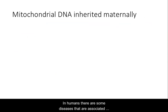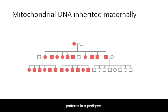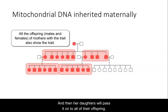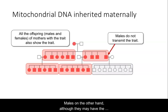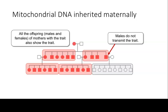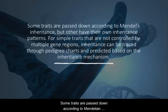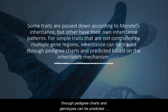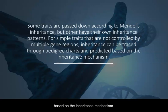In humans, there are some diseases associated with mitochondrial DNA that can be traced through maternal inheritance patterns in a pedigree. Mothers with the trait pass it on to all of their offspring, and their daughters will pass it on to all of their offspring. Males, although they may have the trait, do not transmit it to their offspring. Some traits are passed down according to Mendelian inheritance, but others have their own patterns. For simple traits not controlled by multiple gene regions, inheritance can be traced through pedigree charts and genotypes can be predicted based on the inheritance mechanism.